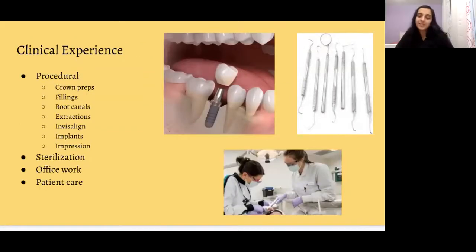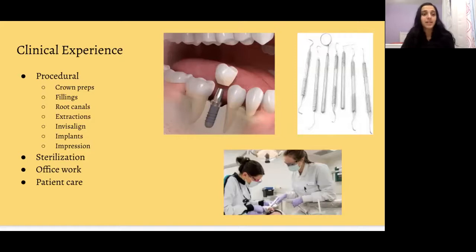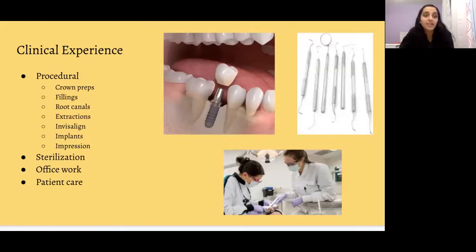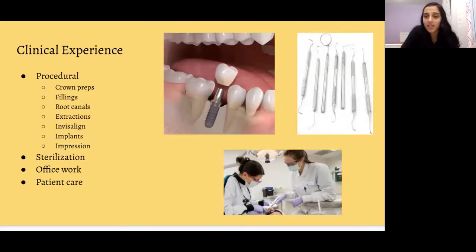When assisting chairside, you'll assist with a variety of procedures. Simpler ones include fillings and crown preps, while others include root canals, extractions, Invisalign, implants, and taking impressions. You also do front desk work, patient care, and sterilization. Different offices do different things — for example, some dentists don't do root canals, while others do. Even after dental school, dentists can take mini-courses to get certified in things like Invisalign.